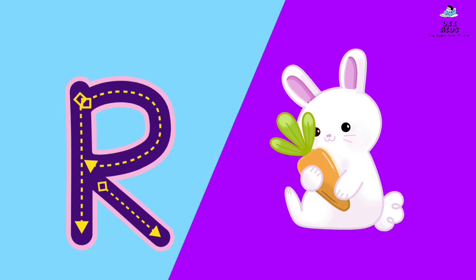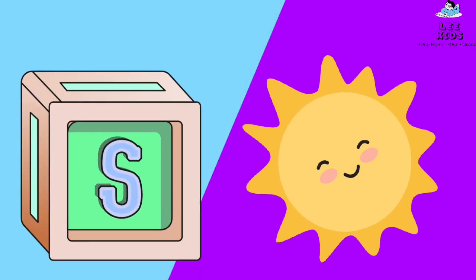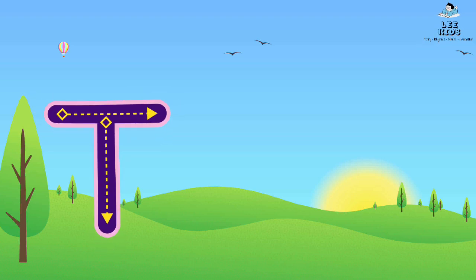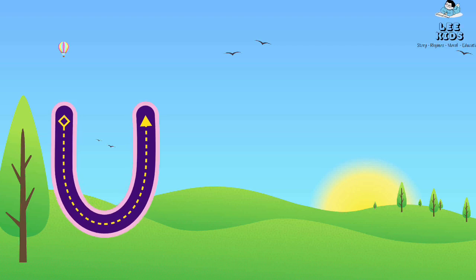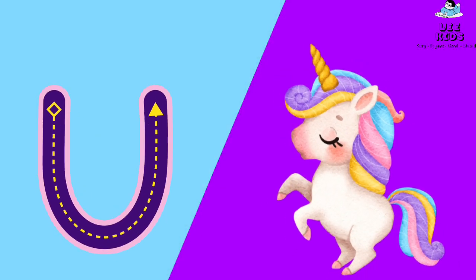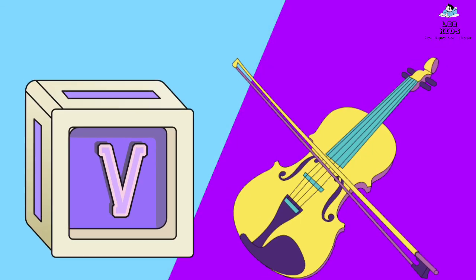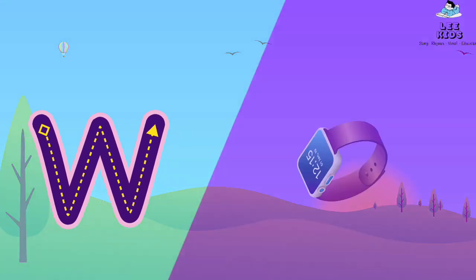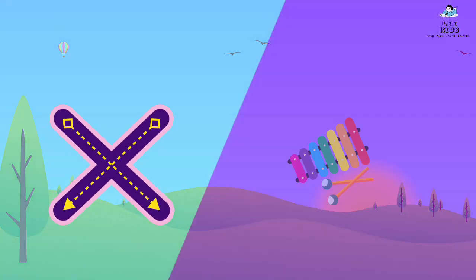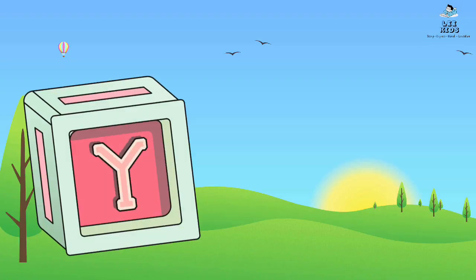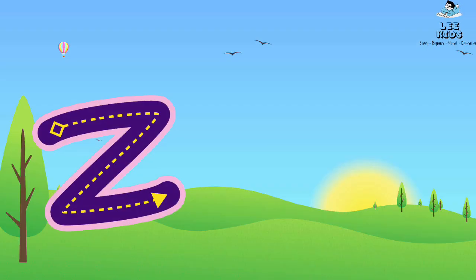S for sun, T for tiger, U for unicorn, V for violin, W for watch, X for xylophone, Y for l low, Z for zebra.